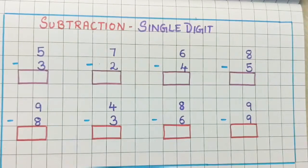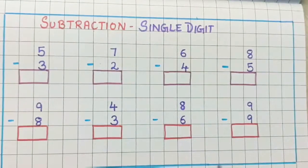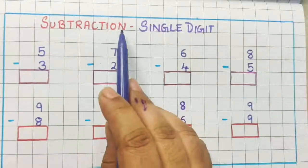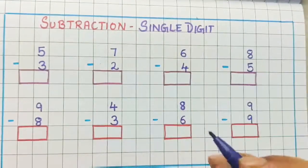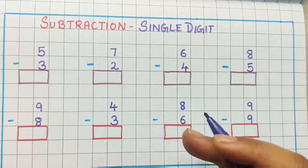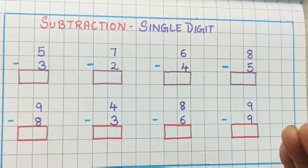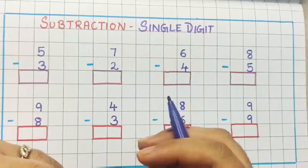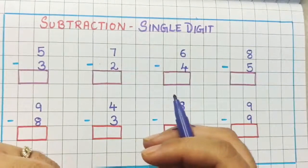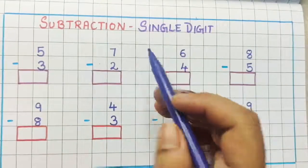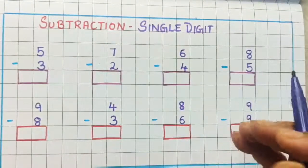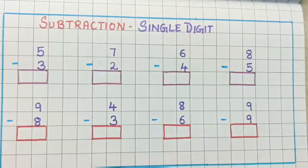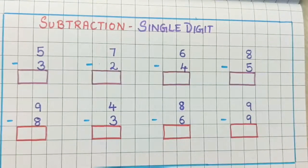Now let's understand first what is subtraction. Subtraction means when a number is decreasing. In addition we had seen that the number increases because we are doing the sum of two numbers. But in subtraction the number decreases, because we are removing something. Let's understand with some examples children.